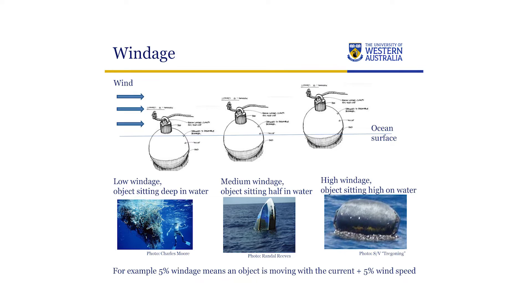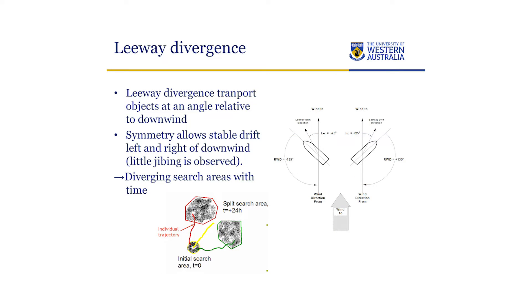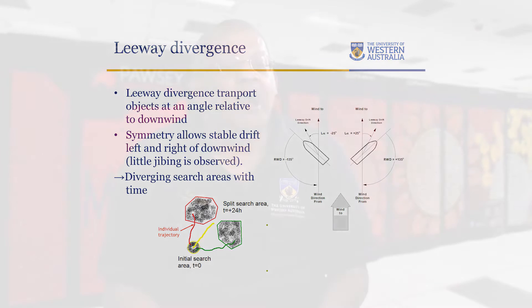The other part we talk about is windage — the effect of the wind directly on a particle or piece of debris. If the debris is low in the water, the effect of the wind is low because it's only affecting what is under the water surface. But depending on how much of the debris is above water, you get much bigger wind effects. The most difficult part is what we call leeway divergence — which describes not just how much the wind affects the debris, but what direction it goes. In fact, depending on the shape of the particle, it can go in either direction.